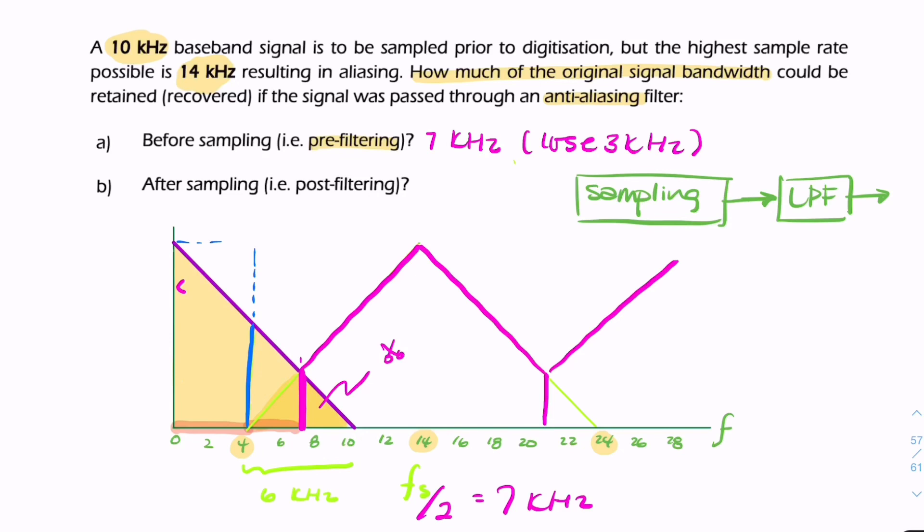because only then could we remove all the corrupted spectrum. The spectrum between 4 and 10 kHz would be corrupted and thrown away. We'd only be able to retain 4 kHz, losing 6 kHz.